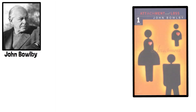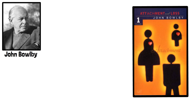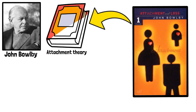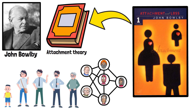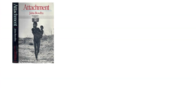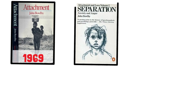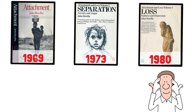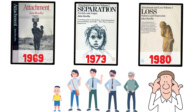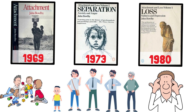John Bowlby's most important book, Attachment and Loss, is a seminal trilogy that lays the foundation for attachment theory, exploring the profound impact of early emotional bonds on human development and relationships. The three volumes — Attachment (1969), Separation: Anxiety and Anger (1973), and Loss: Sadness and Depression (1980) — collectively form a comprehensive framework for understanding human emotional development and the effects of attachment-related experiences.